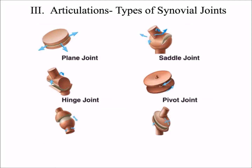The fifth type of synovial joint is the ball and socket joint, where one bone has a structure resembling a ball that fits into another bone's socket. Examples of ball and socket joints are the hip and the shoulder.